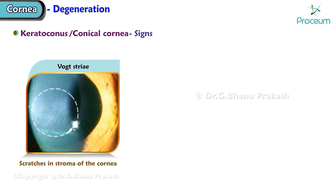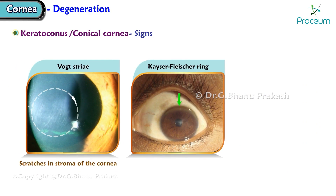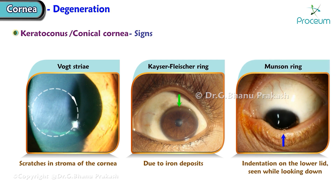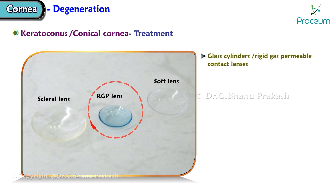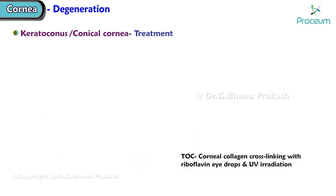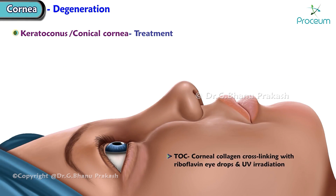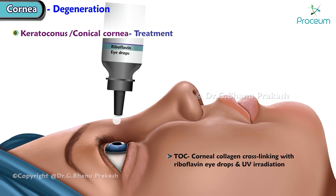Additional signs in keratoconus include Vogt's striae — scratches in the stroma — Kaiser-Fleischer ring due to iron deposits, and Munson's sign, which is an indentation of the lower lid seen while looking down. Treatment options include rigid gas permeable contact lenses, intracorneal ring segment placement, and corneal transplant. The treatment of choice is corneal collagen cross-linking with riboflavin eye drops and ultraviolet irradiation.